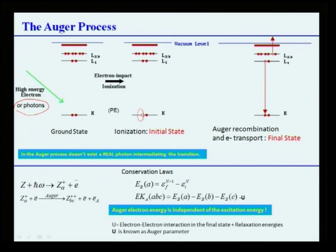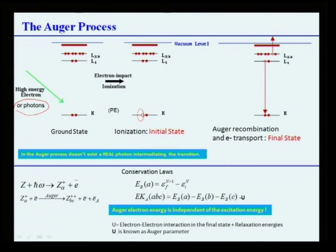Using a conservation law, the Auger electron energy E(KA) — where ABC denotes the three-step process: A is the initial ionization, B is the intermediate transition, and C is the Auger electron emission — is independent of the excitation source. The quantity U, known as the Auger parameter or U parameter, is machine-independent, whereas J is the machine-dependent parameter.